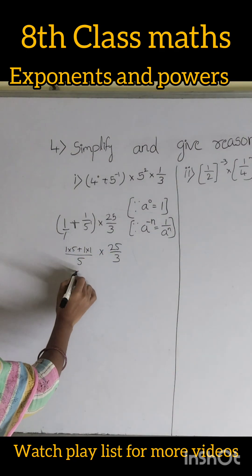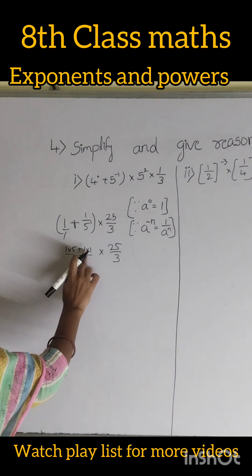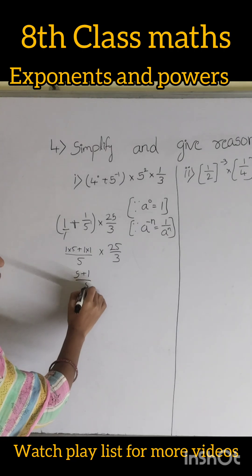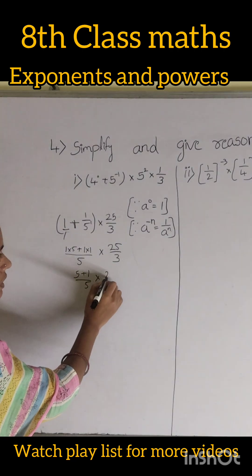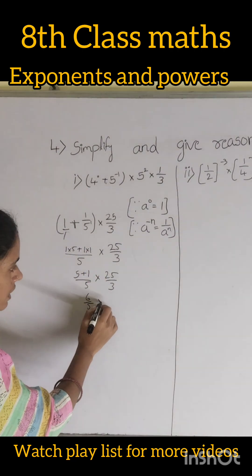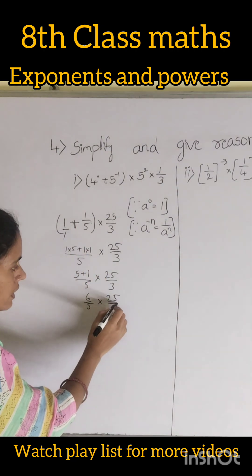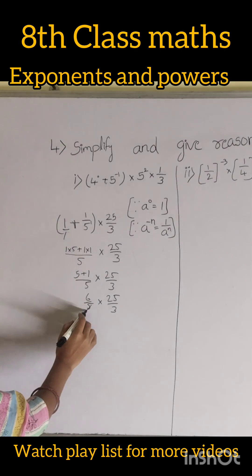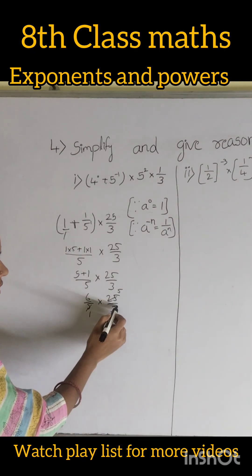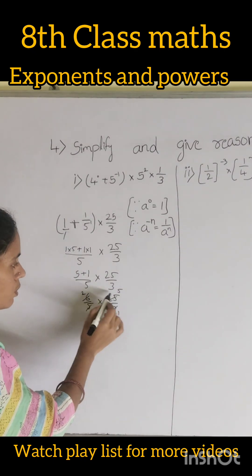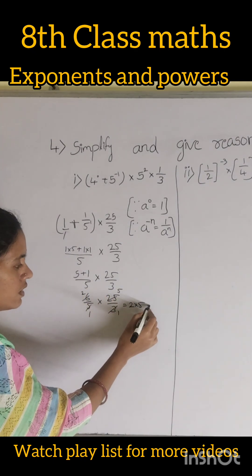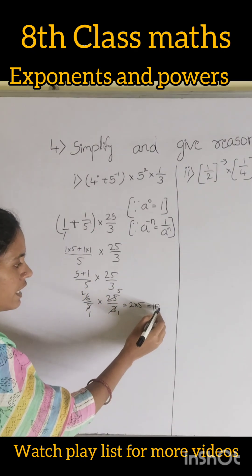So we have 5 plus 1 equals 6, giving us 6 by 5 into 25 by 3. Cancelling 5 with 25 gives 5, so 6 into 5 by 3, and 6 by 3 equals 2, giving 2 into 5 equals 10. The final answer is 10.